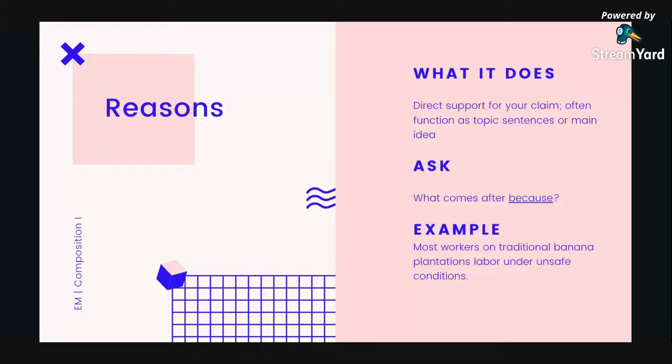Next: reasons. Your reasons provide direct support for your claim and often function as topic sentences or the main idea. To figure out what your reason is, you ask: what comes after 'because'? For example, with the fair trade bananas claim, what comes after 'because' is your reason. So: most workers on traditional banana plantations labor under unsafe conditions — that's the reason.